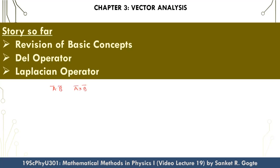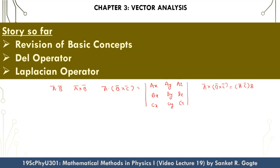In the basics we also revisited the concept of the cross product, which can be calculated by a determinant, and the vector triple product: A cross (B cross C), which is equal to (A·C)B minus (A·B)C. Then we defined the del operator, which is a vector differential operator defined as (∂/∂x)i + (∂/∂y)j + (∂/∂z)k.